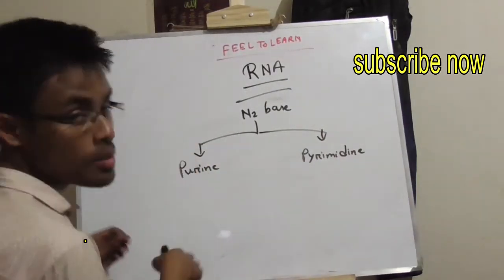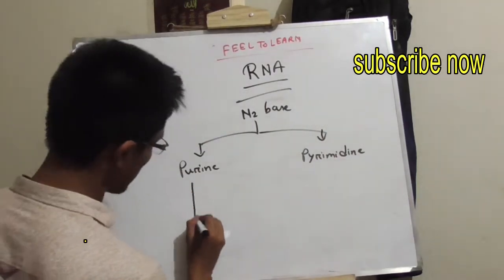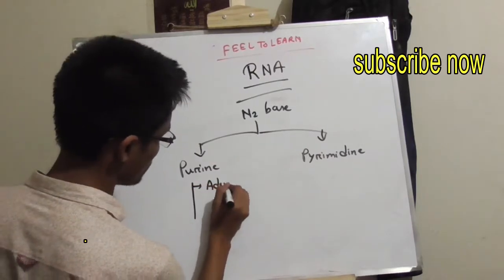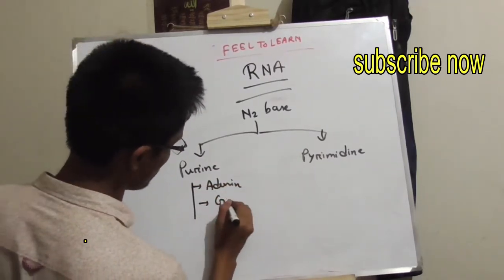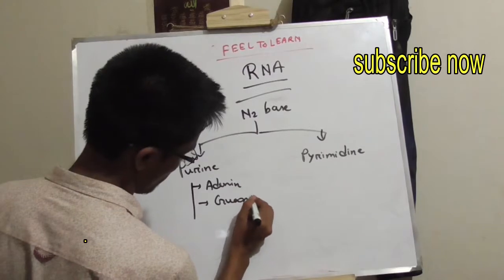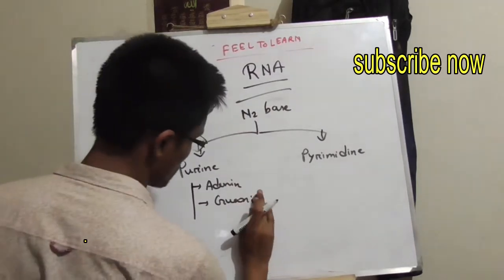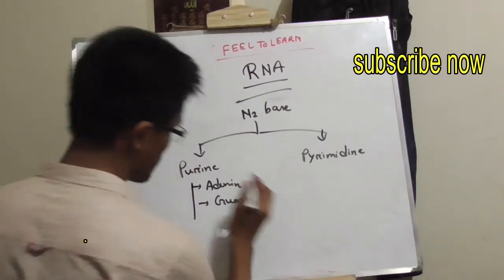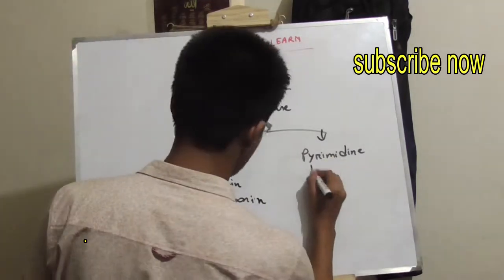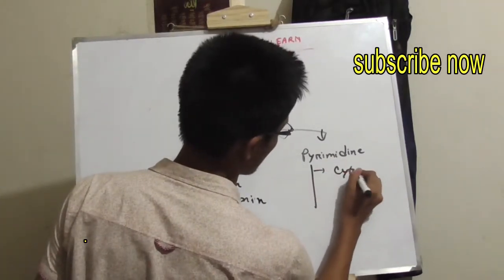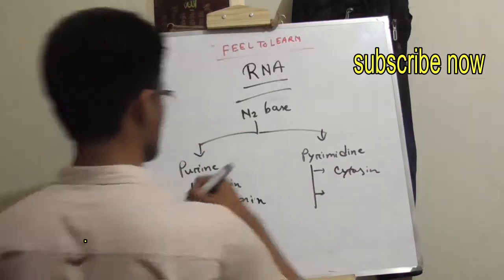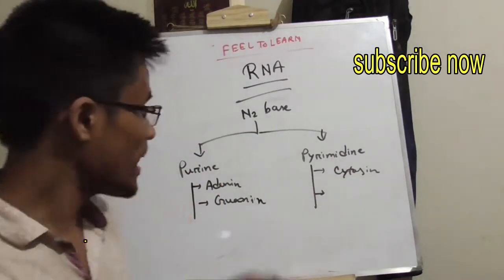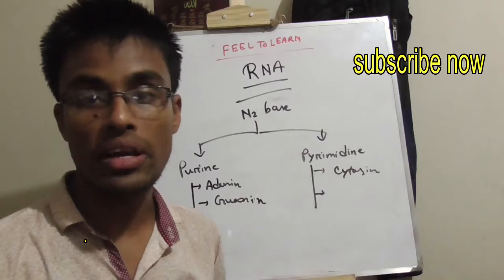So purine is adenine guanine. Pyrimidine is cytosine thymine. In DNA, this pyrimidine is cytosine thymine.